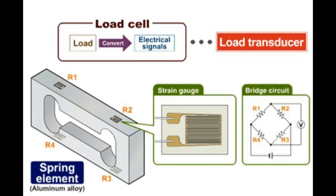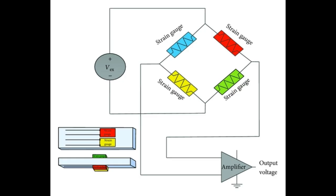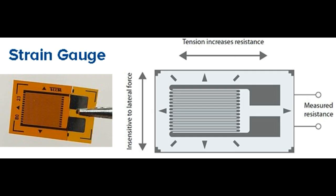When the bridge circuit becomes unbalanced or balanced, it gives some output which is measured by an amplifier. A strain gauge is a device used to measure the strain on another object.